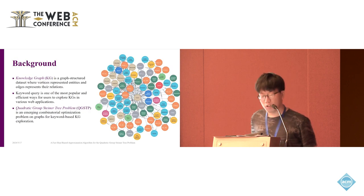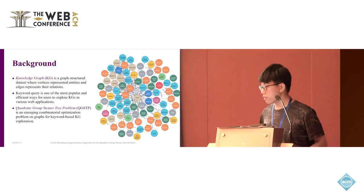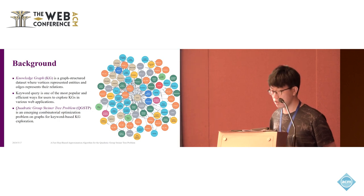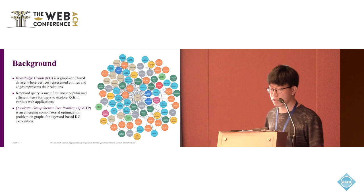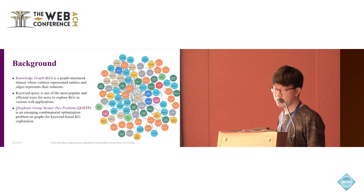Let's begin with the background and the problem. As we know, knowledge graph is a graph structure dataset where the vertices represent the entities and the edges represent their relations. One of the most important tasks in knowledge graph domain is the exploration, which helps users comprehend the large and complex knowledge graph. QA query is one of the most popular and efficient ways for exploration, and it can be formulated as the quadratic standard tree problem.